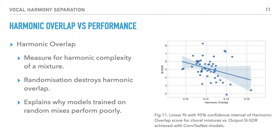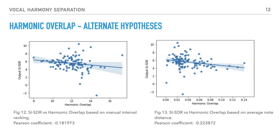The confidence interval in the presented plot shows high variation, suggesting that our measure of harmonic overlap may not be the complete picture affecting separation quality. We tested alternate hypotheses to measure harmonic complexity based on manual interval rankings and pitch distances. Although these correlations were not as strong as our proposed harmonic overlap measure, we found they also correlate well with our intuitive understanding.